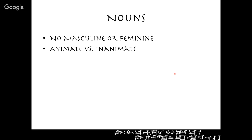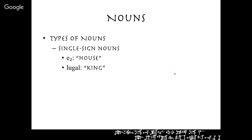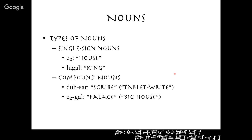Nouns in Sumerian are not classified as masculine or feminine — they are distinguished as animate or inanimate. So 'a-ni' can mean 'his or her' — either one. There are different types of nouns: single-sign nouns like 'e₂' meaning house and 'lugal' meaning king; and compound nouns where two signs combine into a single noun. For example, 'dub-sar' means scribe — 'dub' means tablet and 'sar' is the verb to write, so a tablet writer is a scribe. 'E₂-gal' means palace — 'e₂' is house and 'gal' is big, so the big house is the palace.